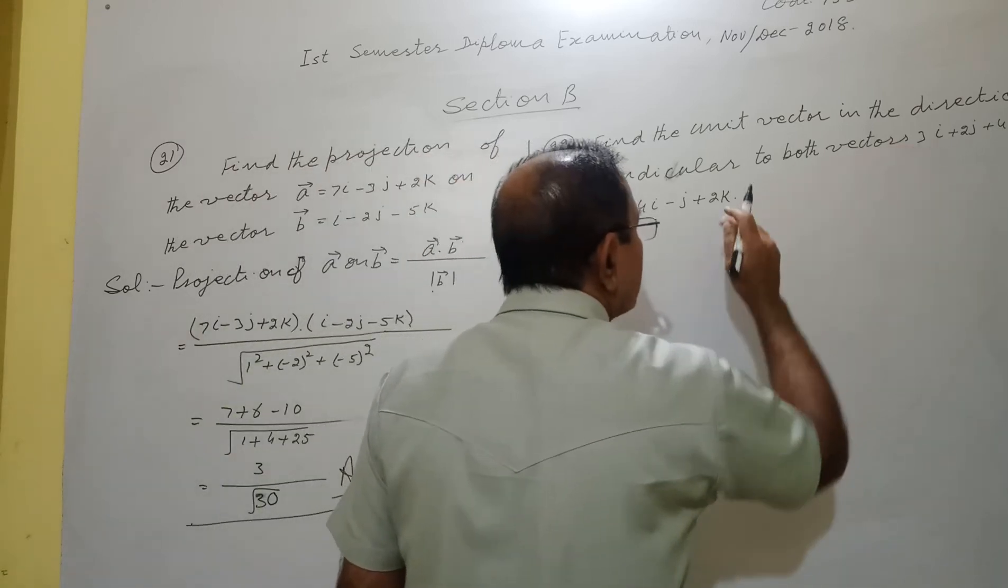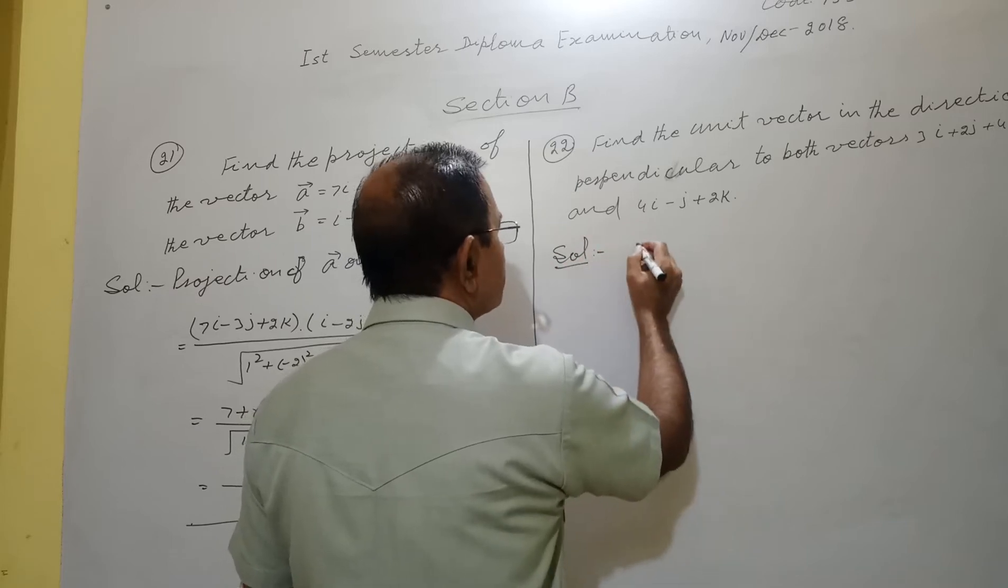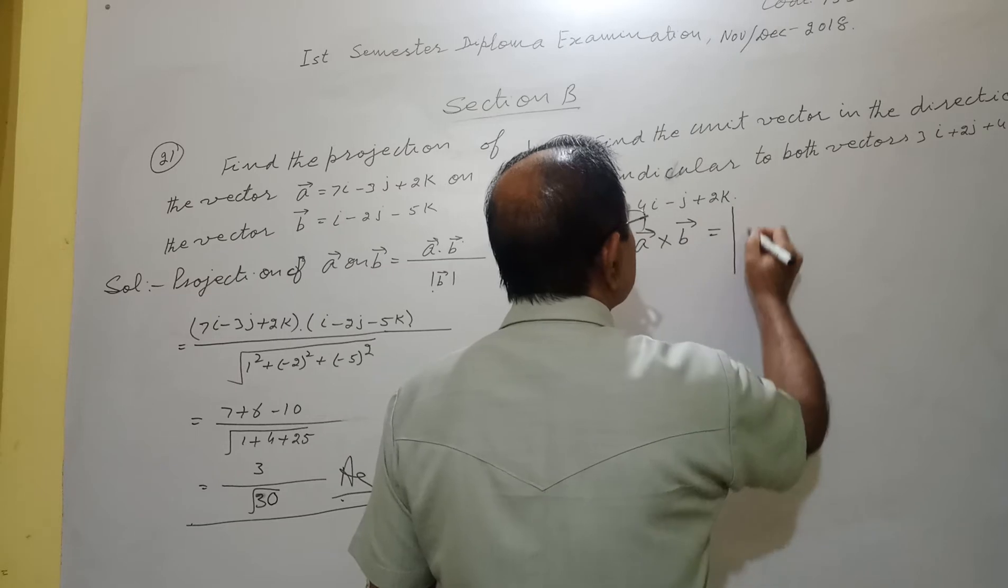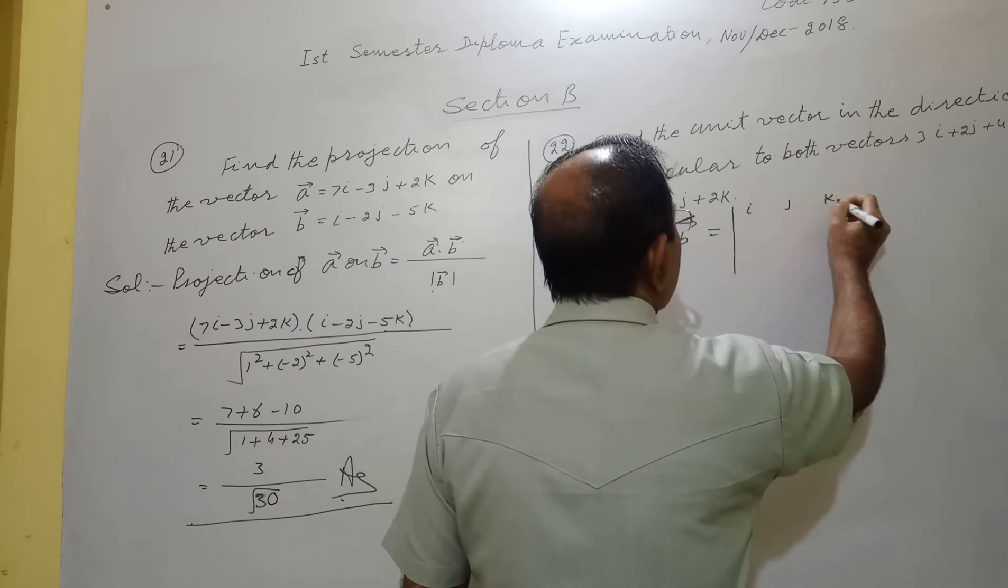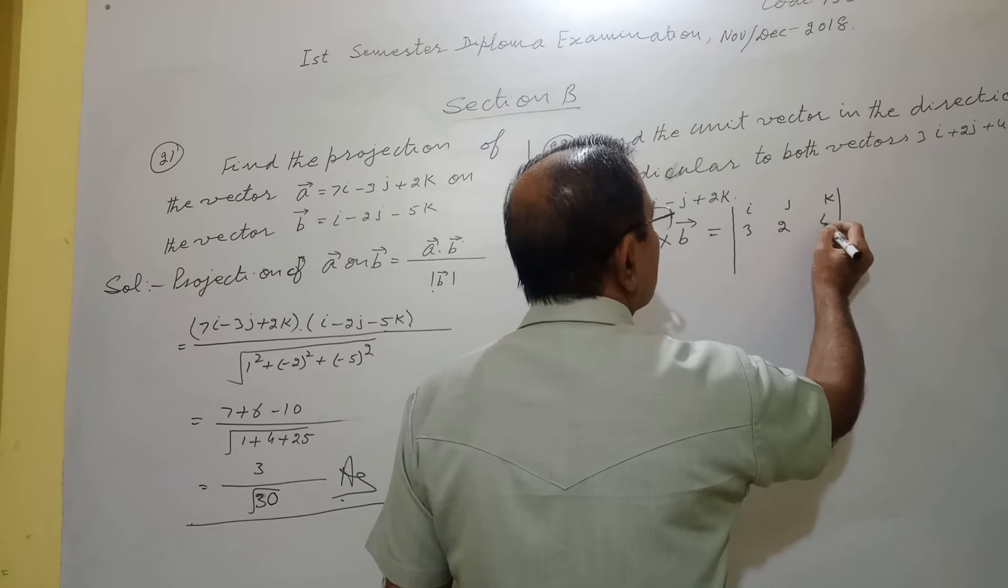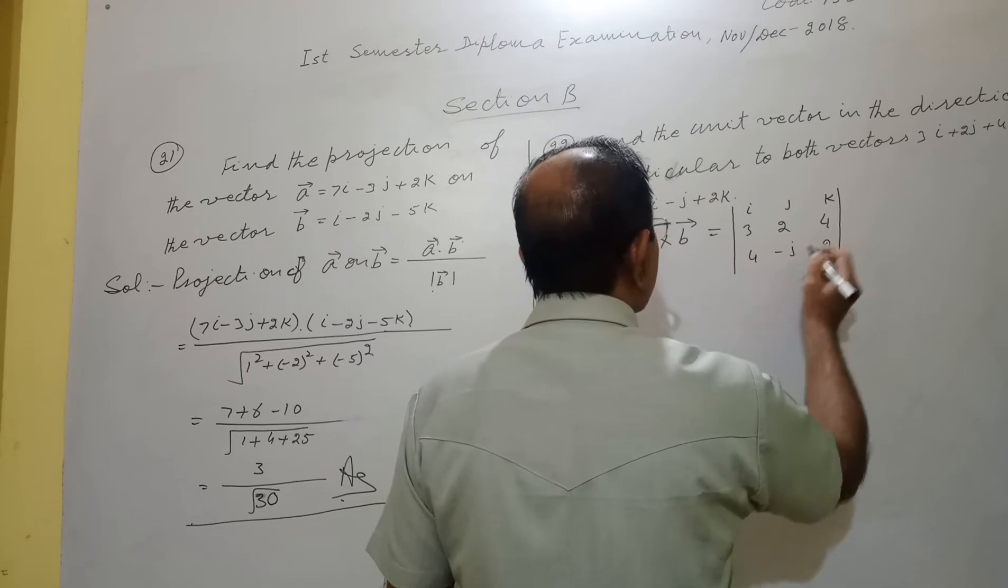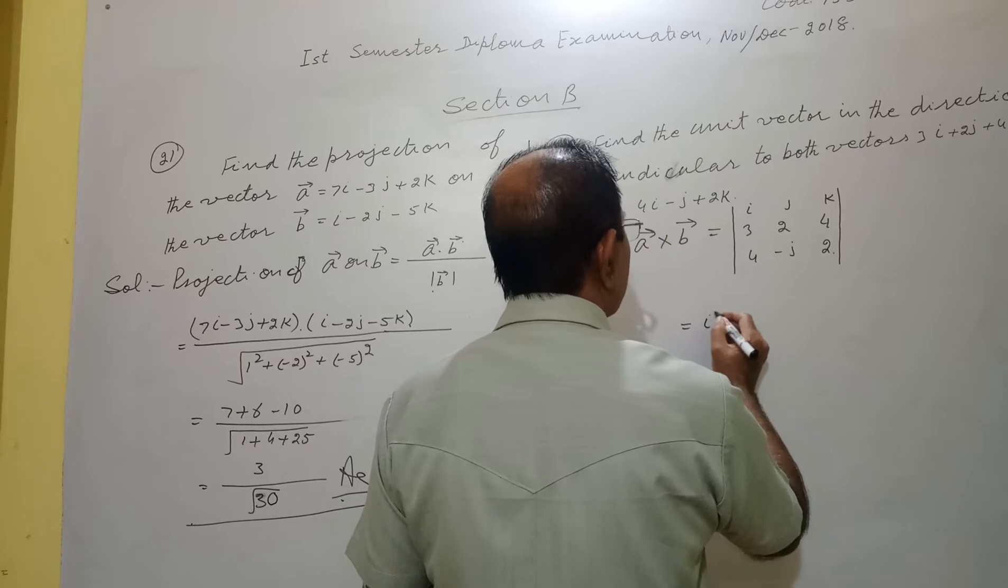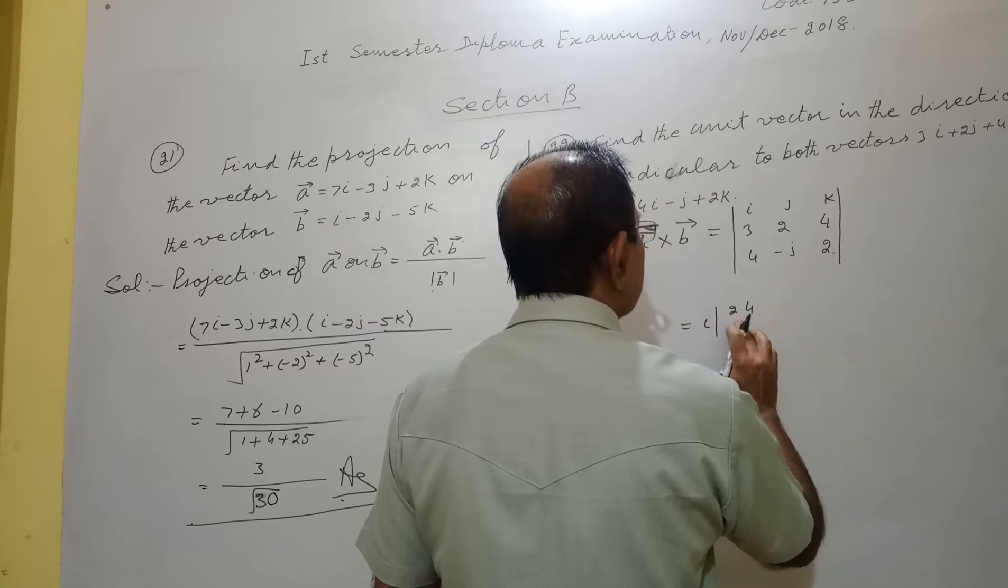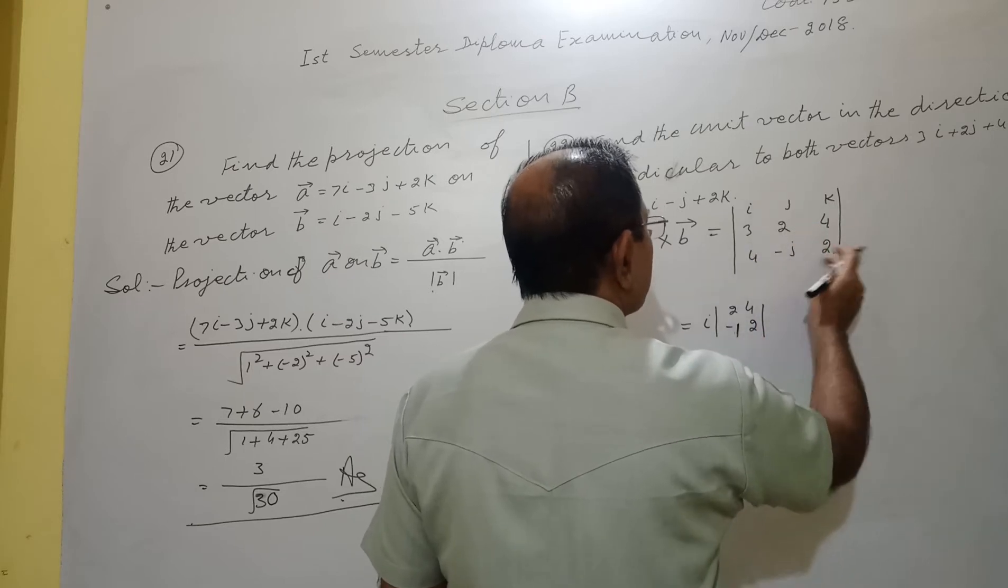The solution is, go for cross product of a and b equals i, j, k. The coefficients of i here are 3, 2, 4, that of b are 4, minus 1, 2. It equals i, 2, 4, minus 1, 2. I cut the first row and column: 2, 4, minus 1, and 2.